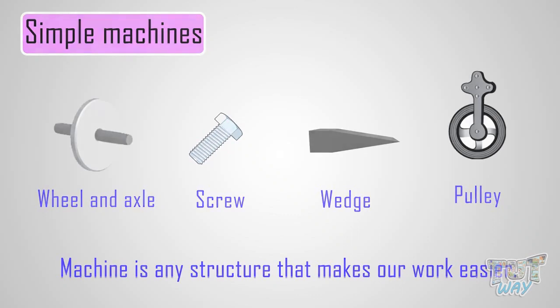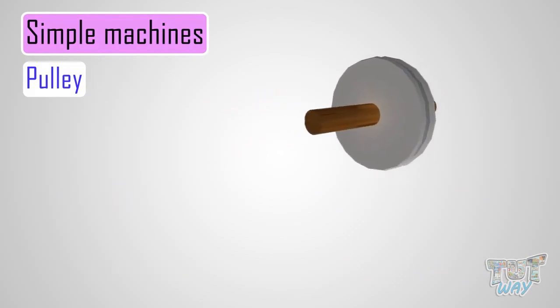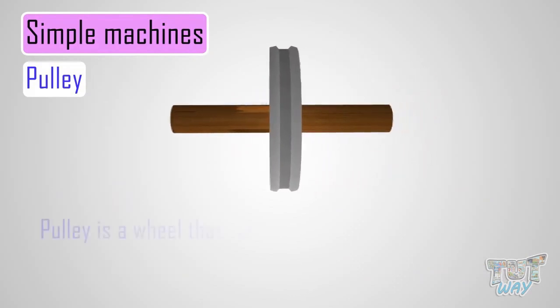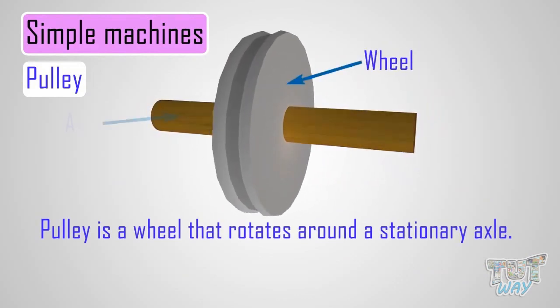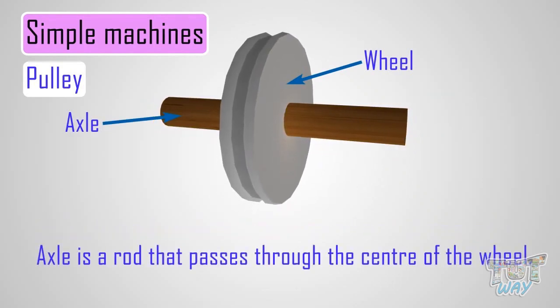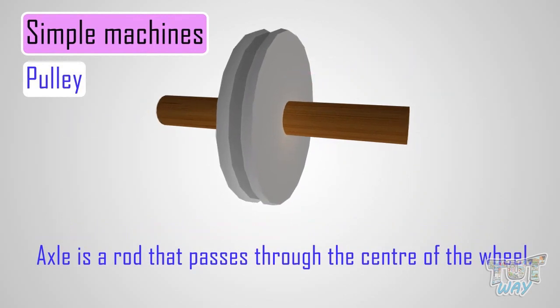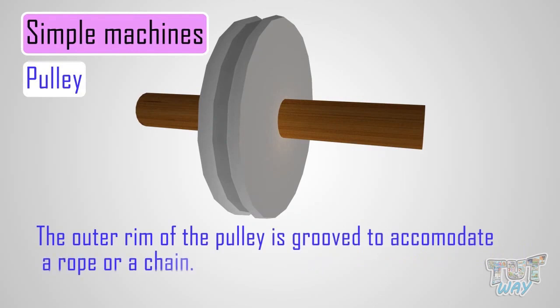And here is another simple machine which is called a pulley. Now let's see what is a pulley and how it makes our work simpler. A pulley is a wheel that rotates around a stationary axle, where the axle is a rod that passes through the center of the wheel. The outer rim of the pulley is grooved to accommodate a rope or chain.